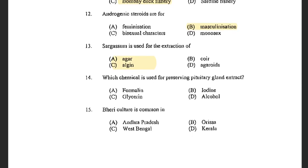Next question: Which chemical is used for preserving pituitary gland extract? Options are formalin, iodine, glycerine, and alcohol. The answer is glycerine. Pituitary gland extract is preserved in glycerine along with some amount of water. Some people use propylene glycol which preserves the pituitary for almost 30 days, and trichloroacetic acid preserves it for 10 days. Don't get confused: the pituitary gland itself is preserved in alcohol and acetone.